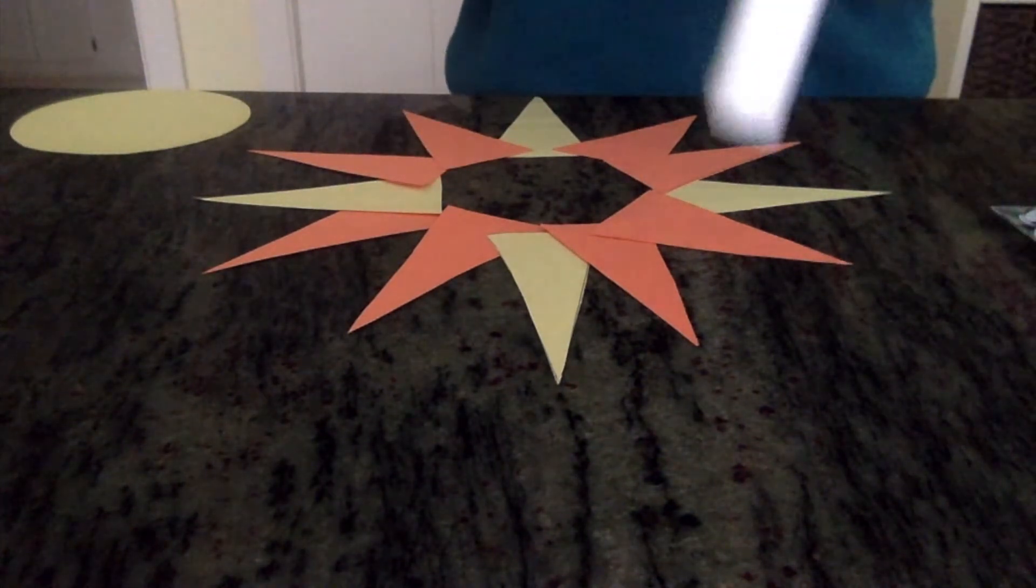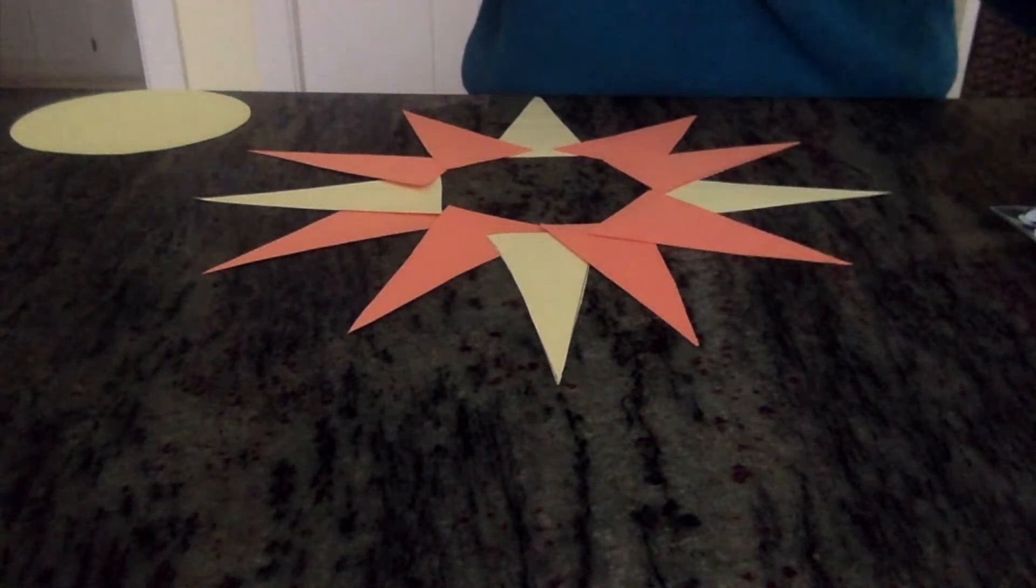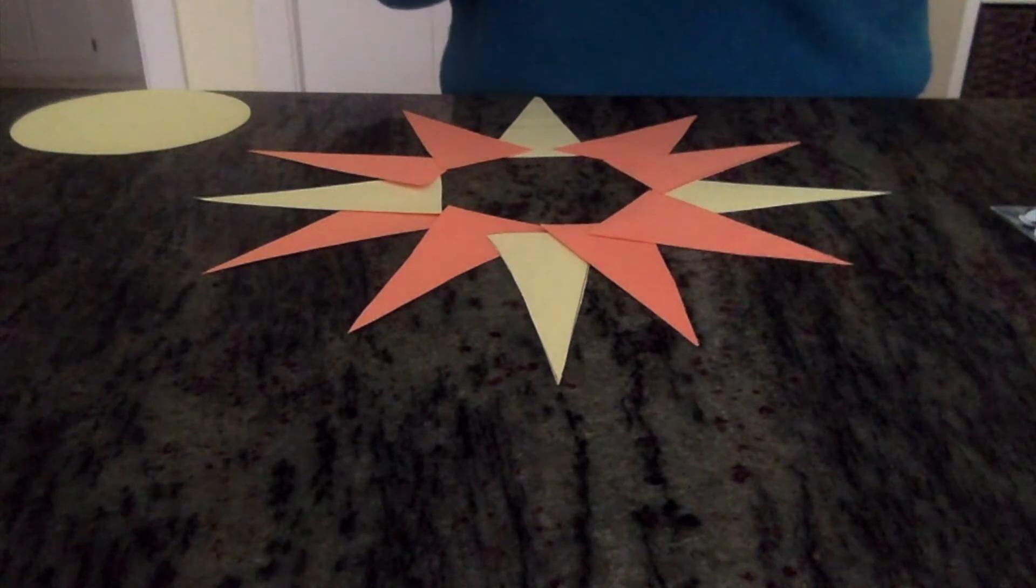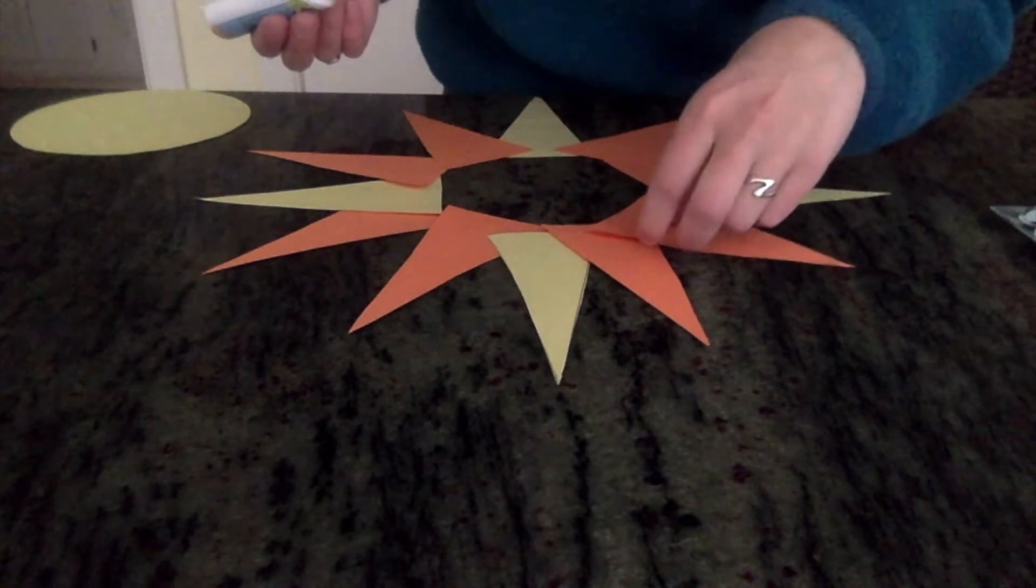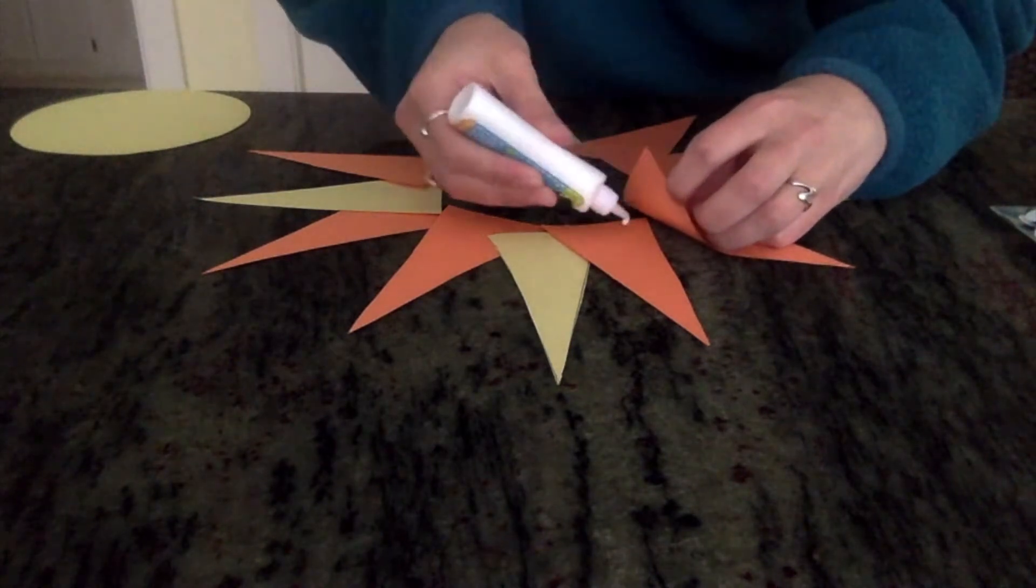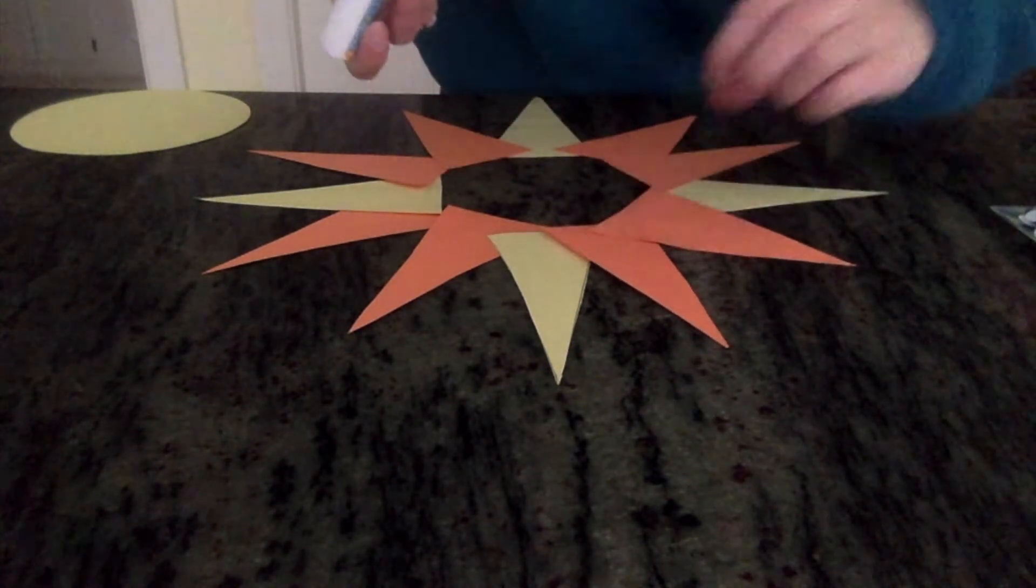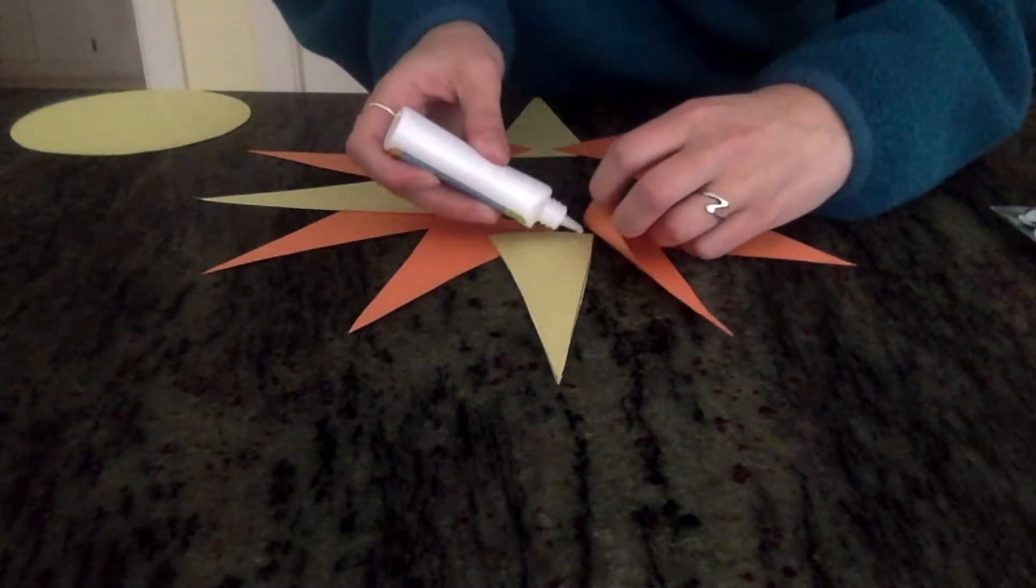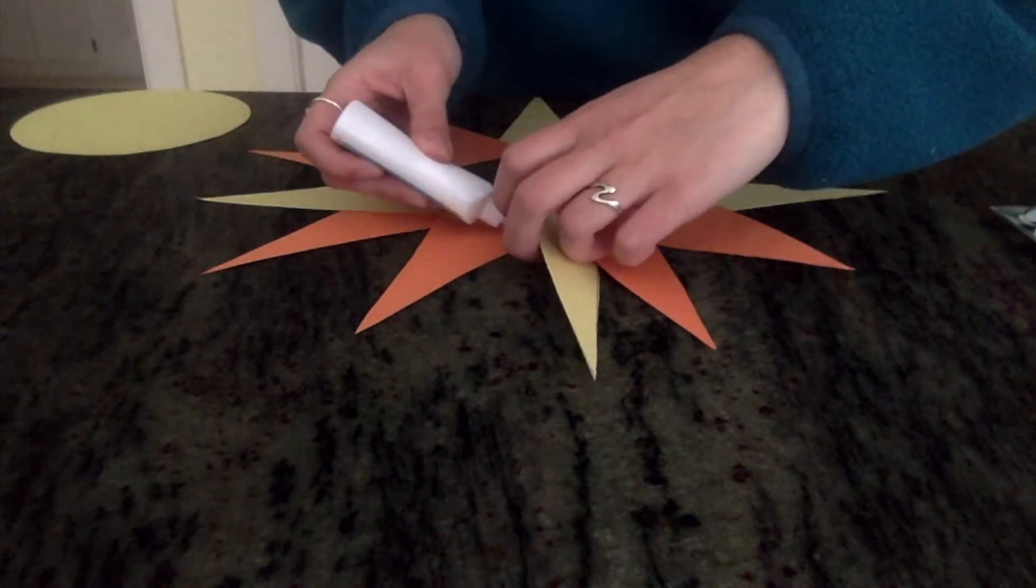Now you can use either liquid glue or a glue stick. For this I'm going to use liquid glue. We are going to glue these by gently picking up the corners and just putting a little drop of glue. And then we can move on. We're going to go all the way around our circle like this.